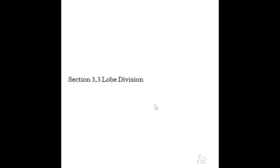Section 3.3, Lobe Division. Now that we've learned what's outside of the liver, we can look at the liver itself. First, we'll learn how the liver is divided using external landmarks — the ligaments. This is anatomical lobe division. Using external anatomical landmarks like the ligaments, we can divide the liver into four lobes: the right lobe, the left lobe, the quadrate lobe, and the caudate lobe.